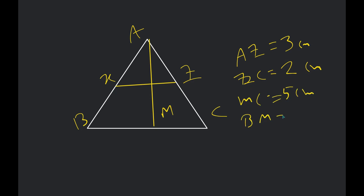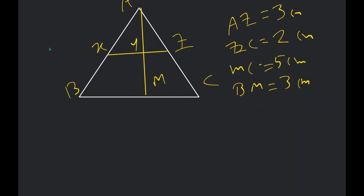EM is equal to three centimeters, correct. So from there, if I find the ratio — I want to find ZY. Wait, where is Y? Y is the midpoint — yes, I was thinking about this. I want to find ZY.